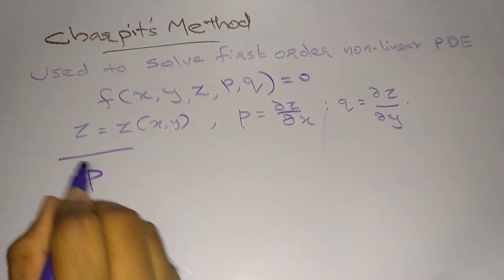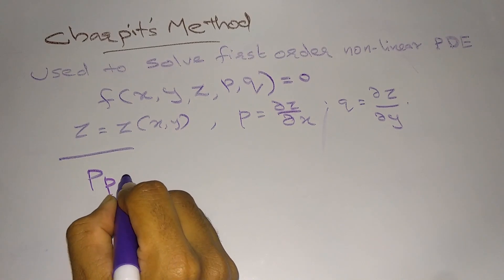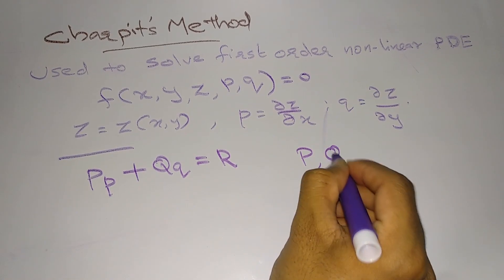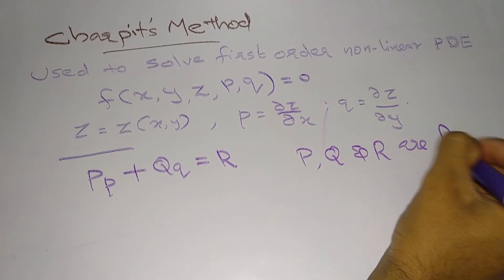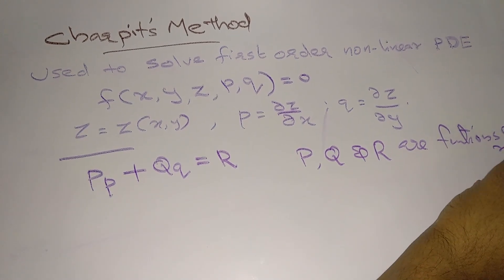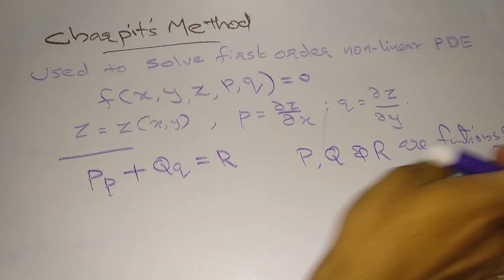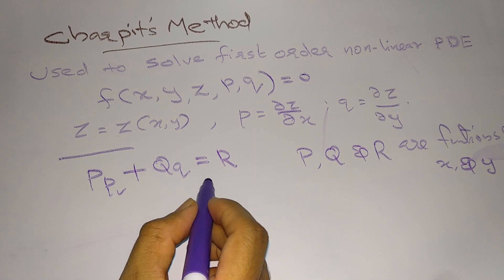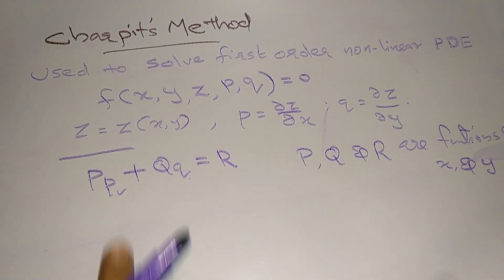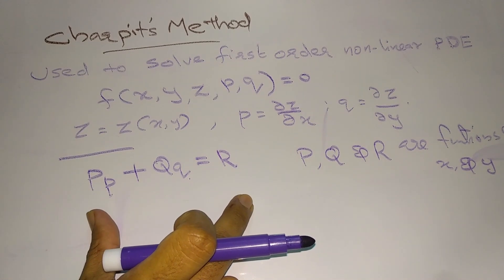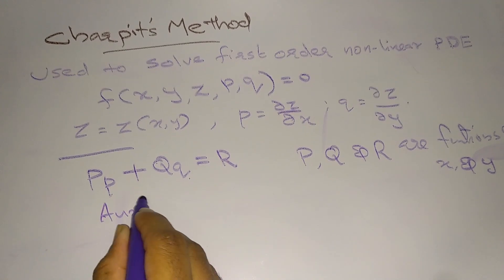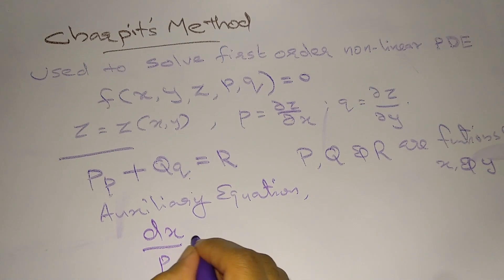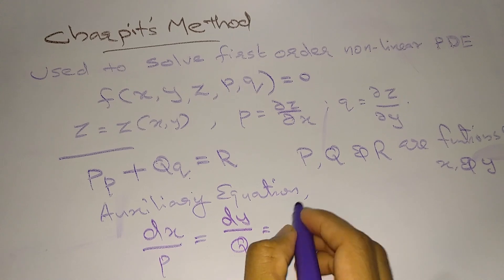Before going to Charpit's method, recall that a linear first-order partial differential equation of the form Pp + Qq = R can be solved, where capital P, Q, and R are functions of x and y. Small p and small q are ∂z/∂x and ∂z/∂y respectively. This linear PDE can be solved using the auxiliary equation dx/P = dy/Q = dz/R.